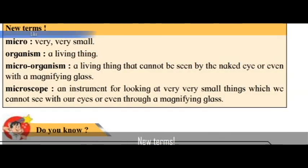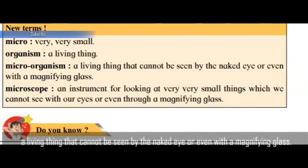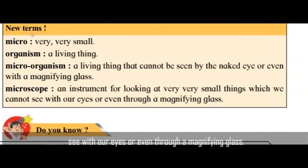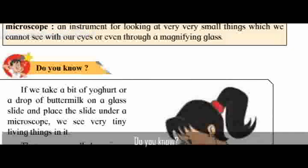New terms — Micro: very, very small. Organism: a living thing. Microorganism: a living thing that cannot be seen by the naked eye or even with a magnifying glass. Microscope: an instrument for looking at very, very small things which we cannot see with our eyes or even through a magnifying glass.